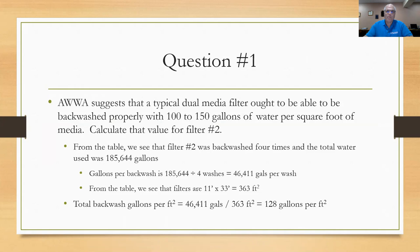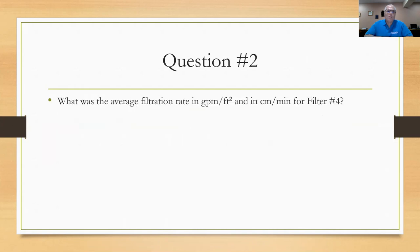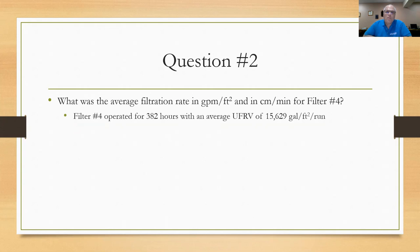Question number two asks: what is the average filtration rate in gallons per minute per square foot and in centimeters per minute for filter number four? In previous videos, we've talked about expressing this in terms of filtration velocity rather than just filtration loading rate, which is a more old-fashioned way. Filter number four operated for 382 hours and had an average unit filter run volume of 15,629 gallons per square foot per filter run.